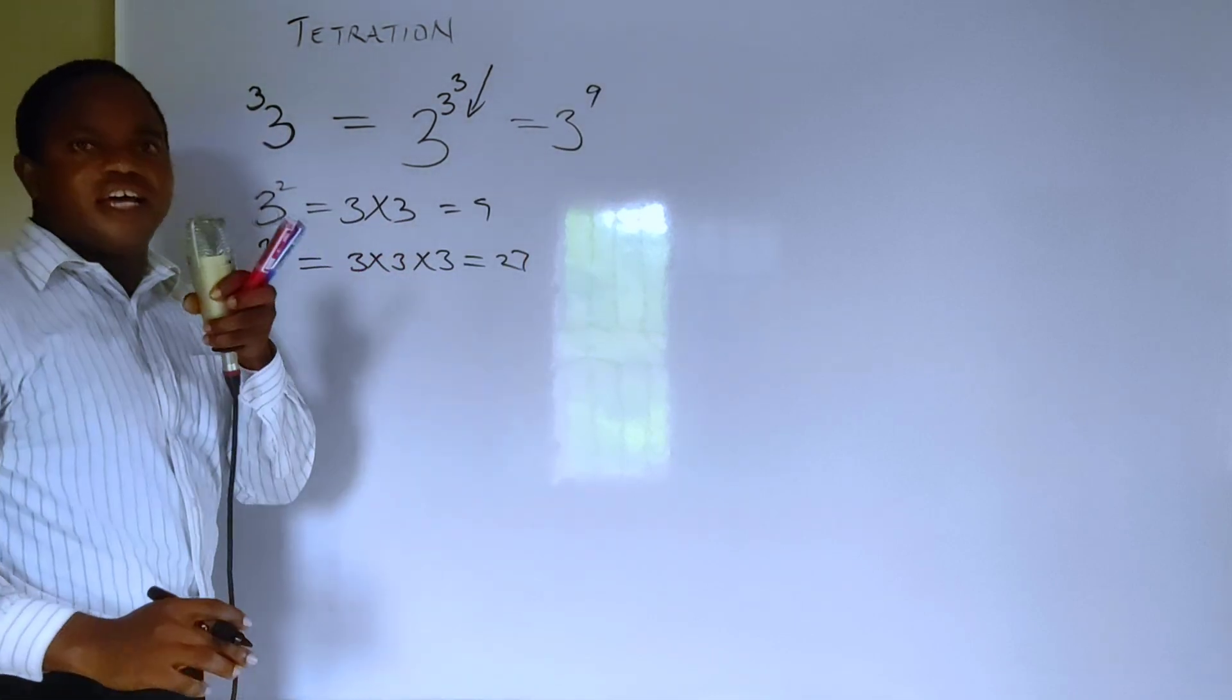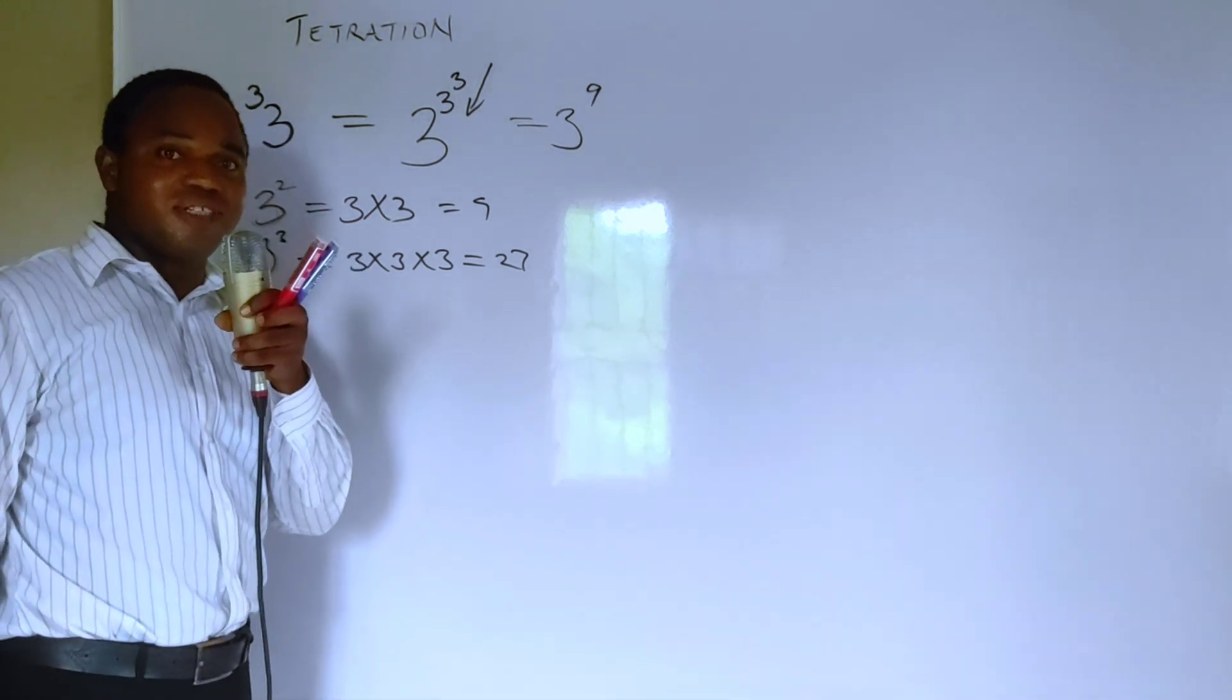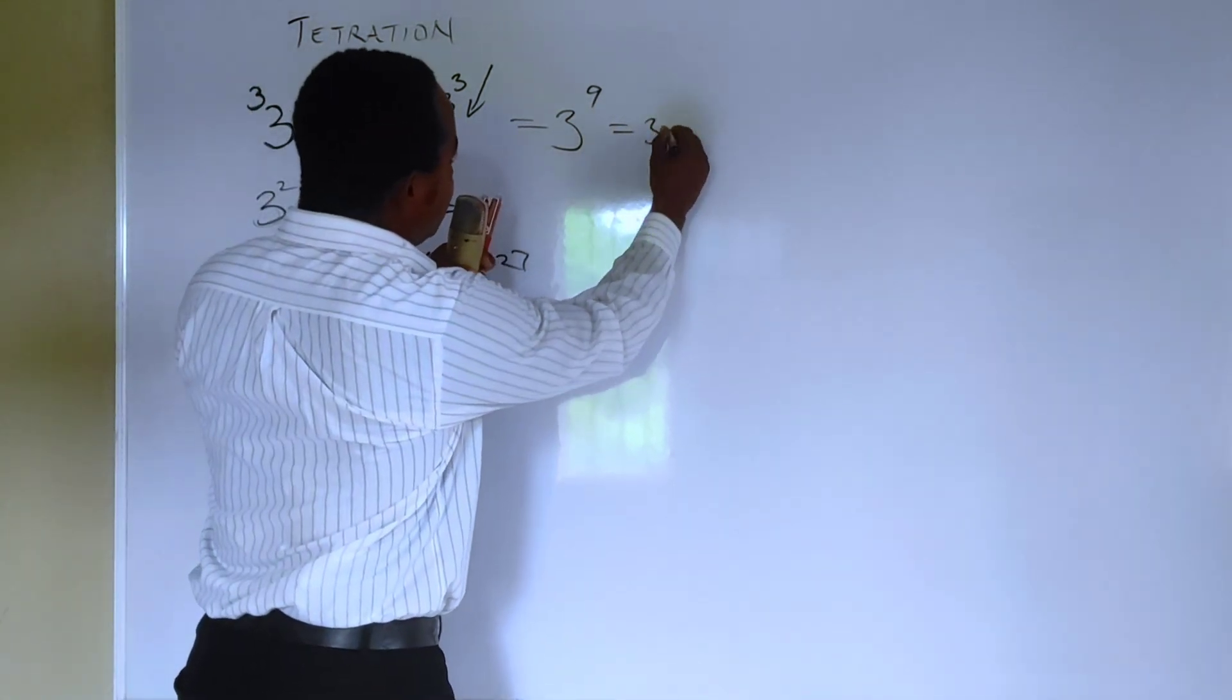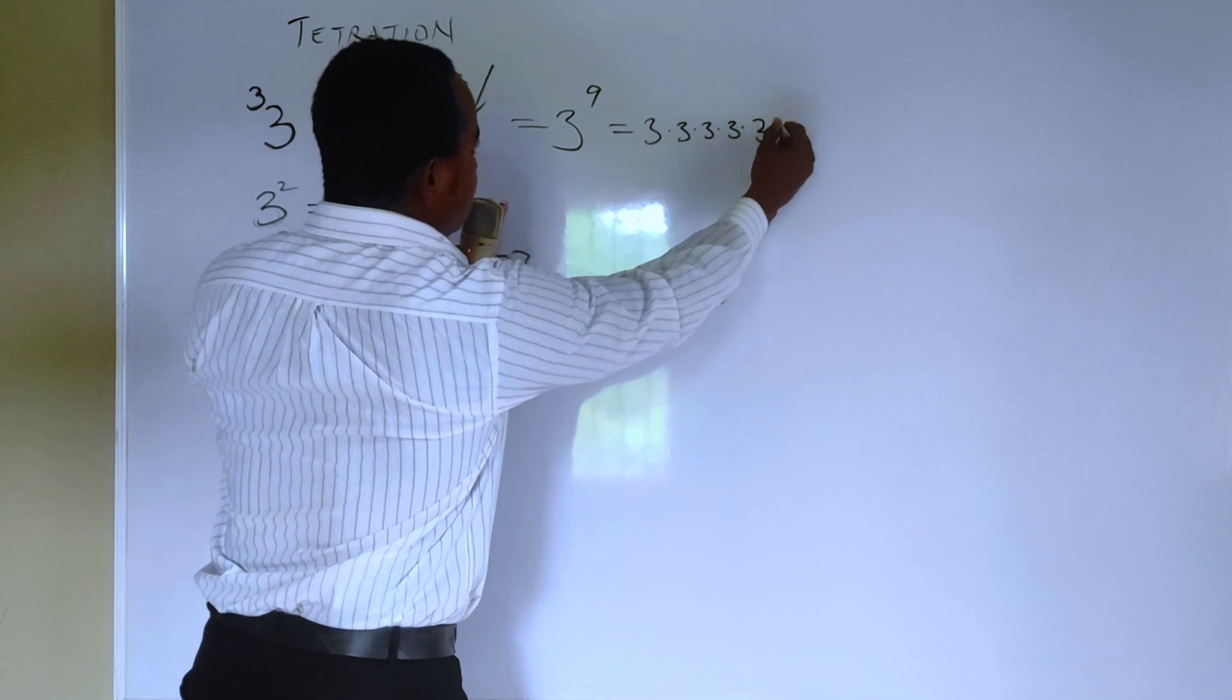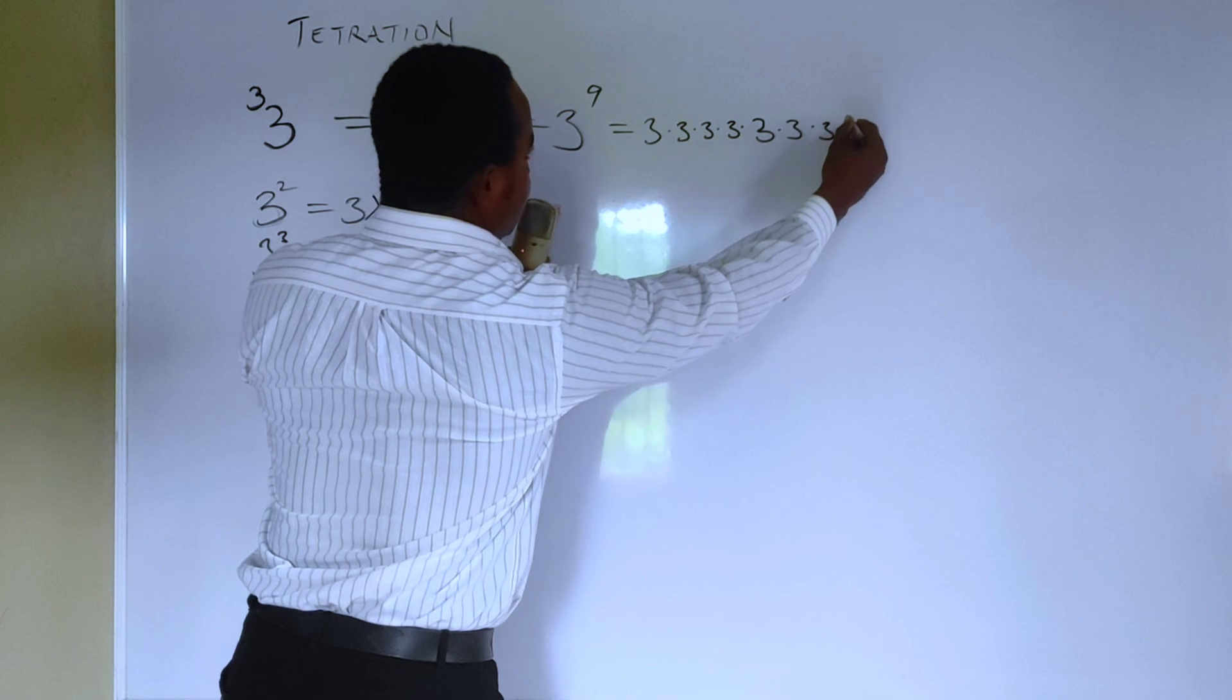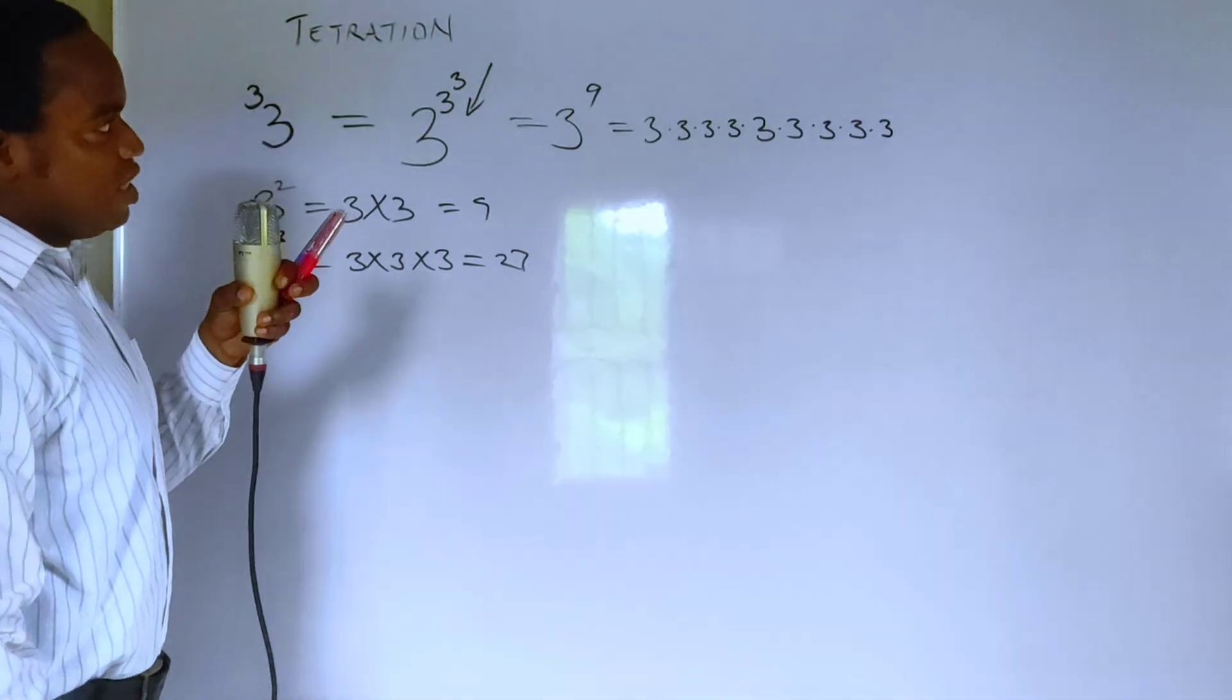You will notice here that you are going to probably need your calculator to solve this. Because this would mean 3 multiplied by 3 and multiplied by 3 in 9 places, right? 1, 2, 3, 4, 5, 6, 7, 8, and 9. So this gets big pretty quickly.